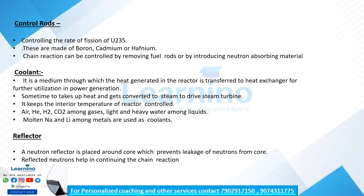Control rods are used to control the rate of fission of uranium. These control rods are made of boron, cadmium, or hafnium. This material is used in control rods to control the chain reaction by removing fuel rods or by introducing neutron-absorbing material. This is how control rods function.